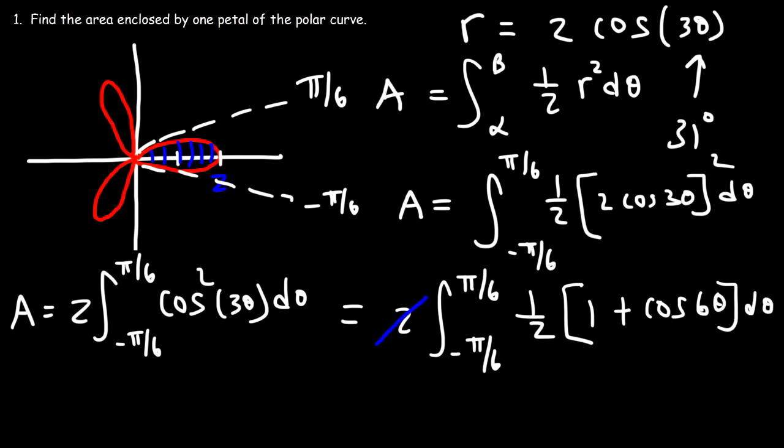Now let's go ahead and find the area using the formula: the integral from alpha to beta, one-half r squared d theta. Alpha is negative pi over 2, beta is pi over 2. And r squared is going to be 3 squared, which is 9, times cosine squared theta. So let's move the 9 over 2 to the front and replace cosine squared with one-half times (1 plus cosine 2 theta). Then multiply 9 over 2 by 1 over 2, giving 9 over 4 on the outside.